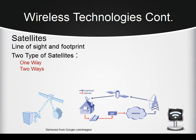Satellites provide wireless connectivity between locations that are within the satellite's line of sight and footprint. There are two types of satellite connections. One-way systems use a conventional internet link, usually telephone, for upload and the satellite link for high-speed download. Two-way systems add a transmitter to the satellite modem and upload via the satellite.